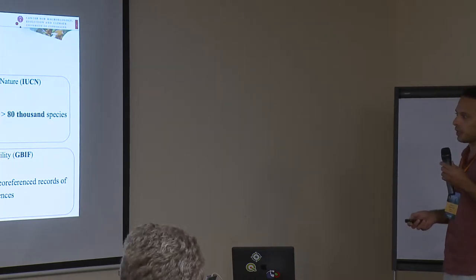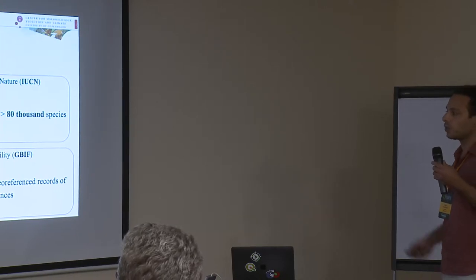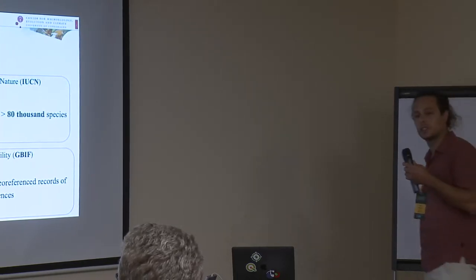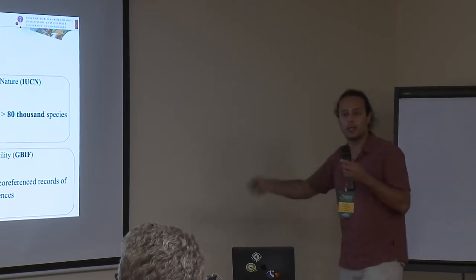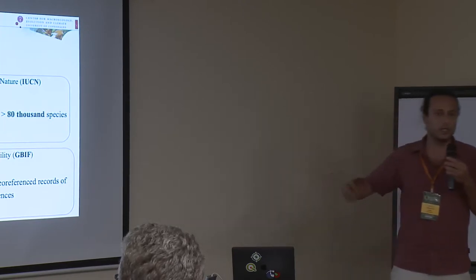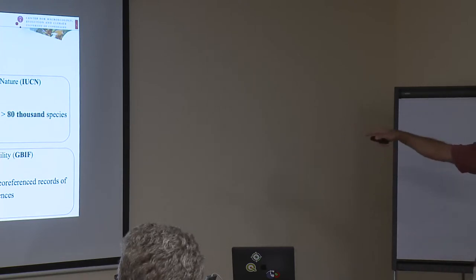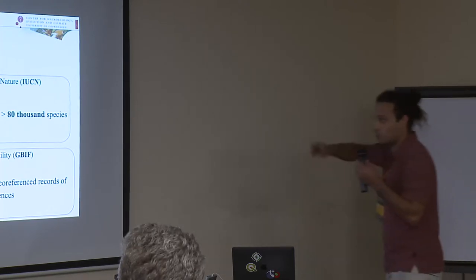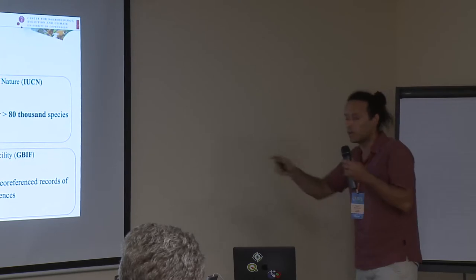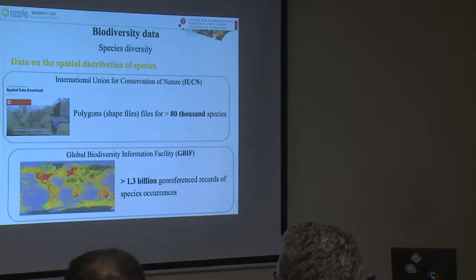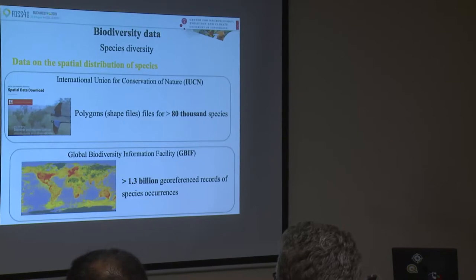Another very cool database is GBIF, which contains more than 1 billion georeferenced occurrences of species. Citizens can also collect data and upload it into this database, and researchers or anyone can download and analyze it. We're talking about truly big data that are easily accessible to people.